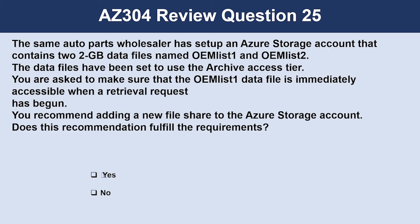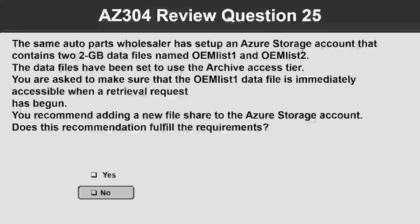Question number 25. The same auto parts wholesaler has set up an Azure storage account that contains 2GB data files named OEM List 1 and List 2. The data files have been set to use the archive access tier, and you are asked to make sure that List 1 is immediately accessible when a retrieval request has begun. Do you recommend adding a new file share to the storage account? The correct answer is no. A new file share to the Azure storage account has no effect on whether the OEM List 1 data file will be immediately accessible once a retrieval request has begun.